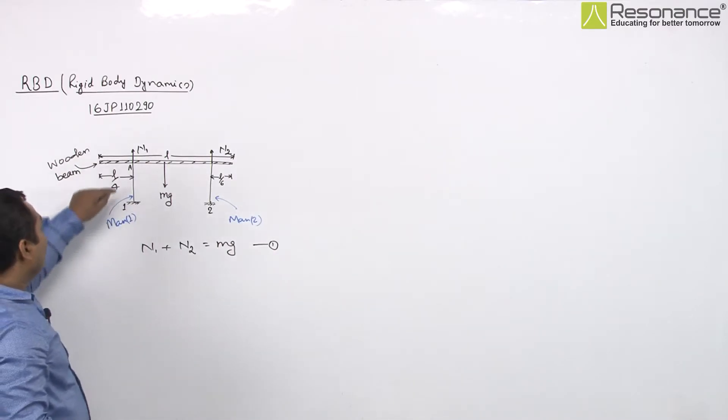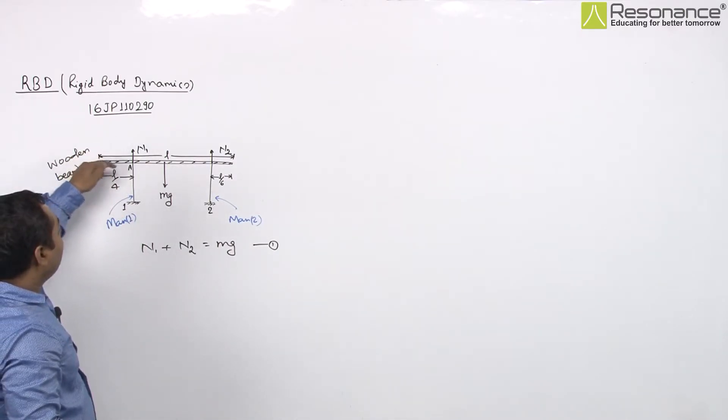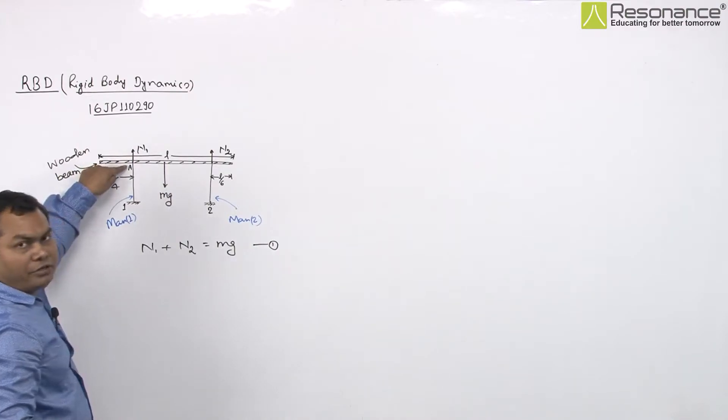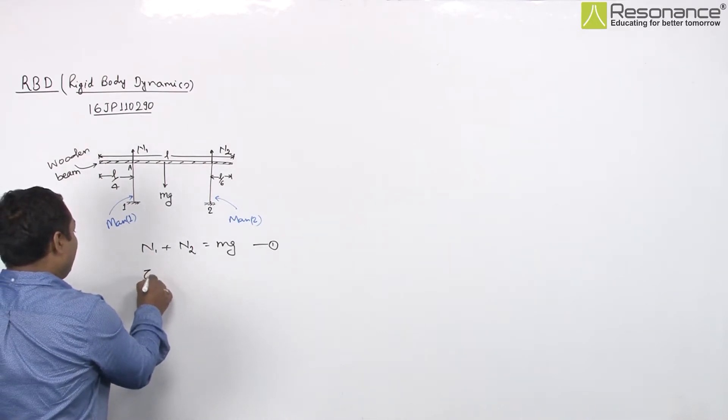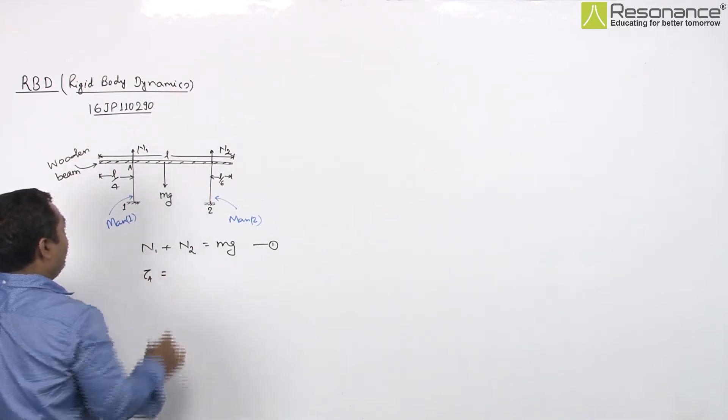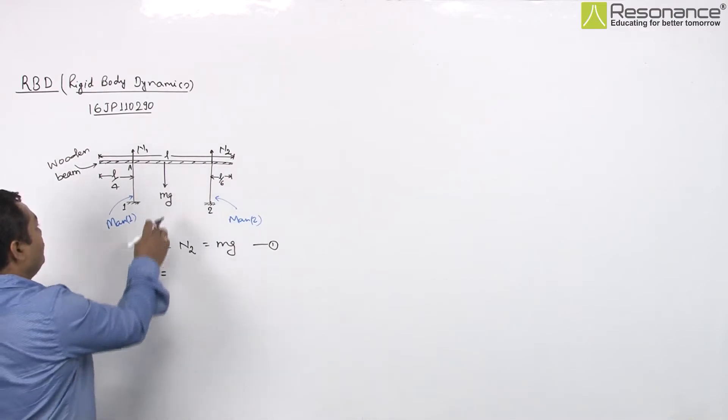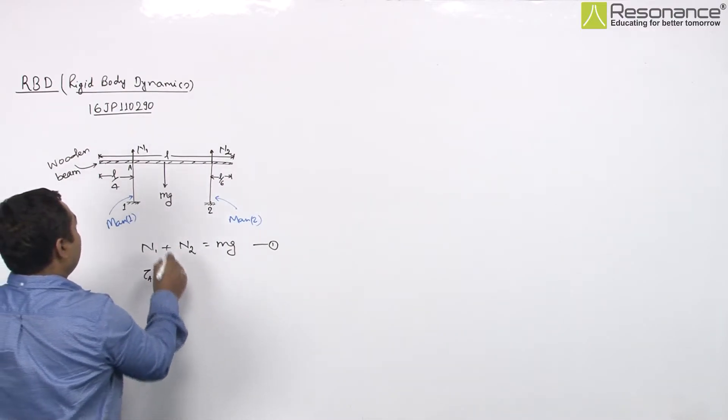Now we have to take torque about this point of the wooden beam. Torque about point A will be equal to torque due to Mg.